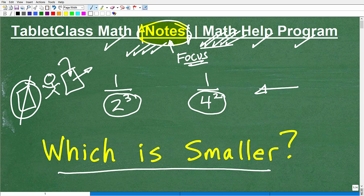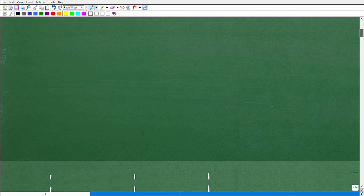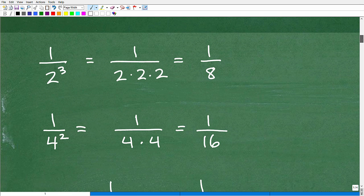So, all right, so here we go. We got 1 over 2 cubed, and we're comparing it to 1 over 4 squared, which is smaller. If you want to pause the video to go ahead and determine that before you see my answer, or the answer, how I'm going to explain it, go ahead and do that now, because I'm going to get into the solution right now.